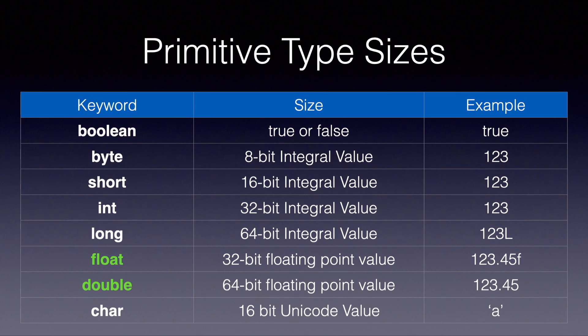Let's jump back to our slide and look at the other data types. The next two are float and double, used to store decimal numbers. They can both store similar types; the only difference is the size. Moving on to the next primitive type, character — char can store 16-bit unicode values. If you search for 16-bit unicode values you'll get a table of all the characters and symbols that can be stored in a char variable. We usually use char type to store letters.